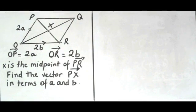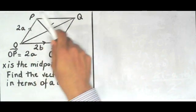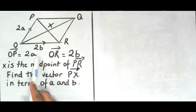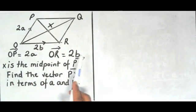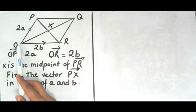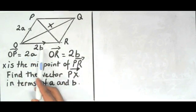This question is on vectors. The question is telling me that I have a parallelogram. It's also telling me that OP is equal to 2a and OR is equal to 2b. So therefore if I'm going from O to P the vector is 2a and if I'm going from O to R the vector is 2b.